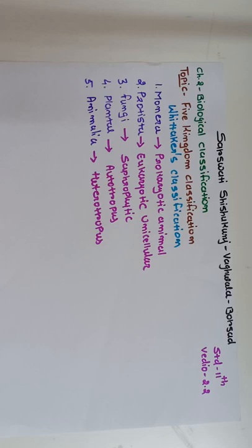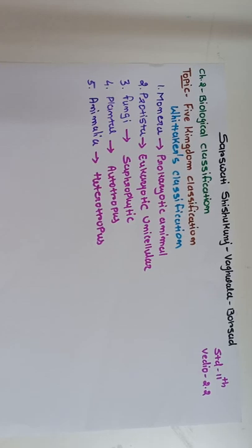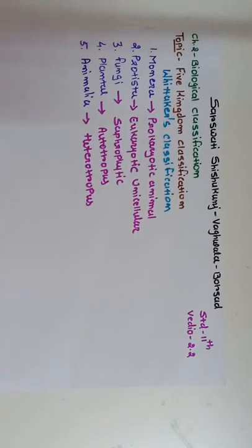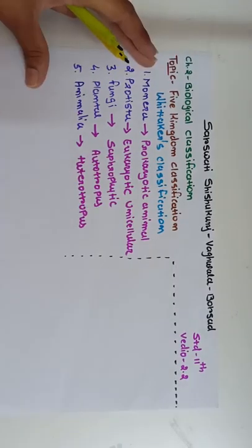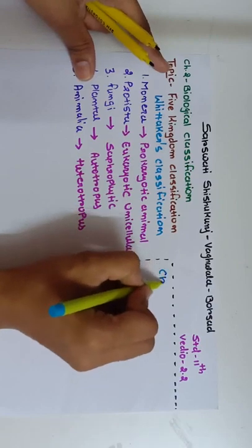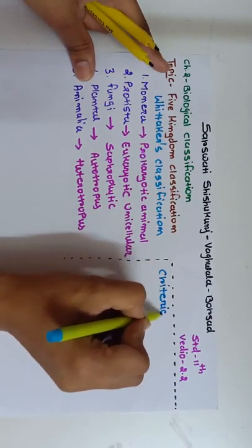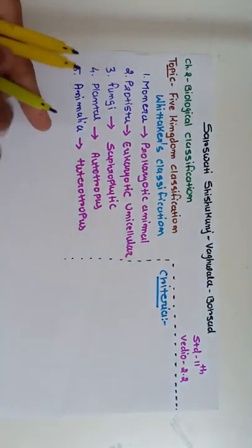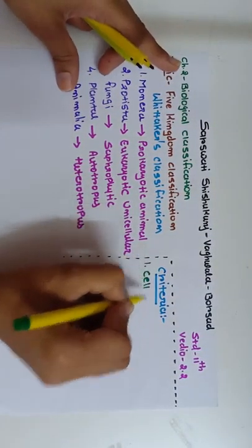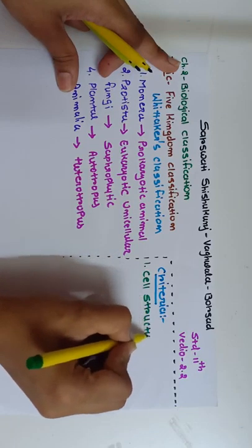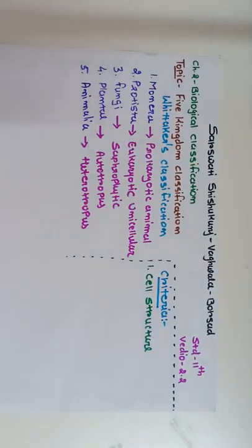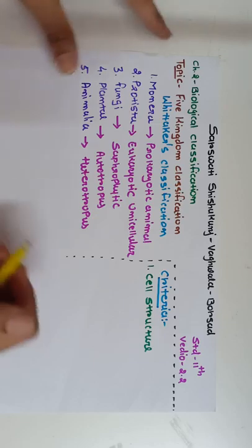It is a very natural classification. Whittaker used very primitive and very useful criteria for this classification. The first criteria is cell structure — whether the organism is unicellular or multicellular, and whether the cell is a simple cell or a complex cell.